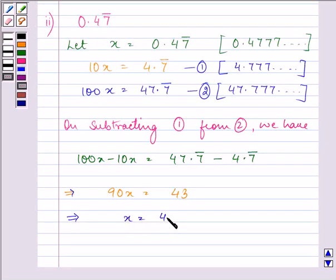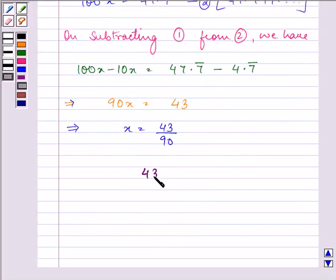of x is equal to 43 by 90. So the answer to the second part comes to us as 43 by 90.